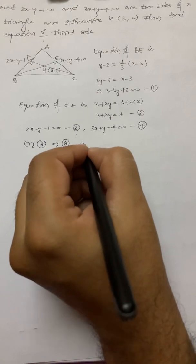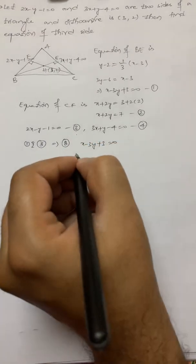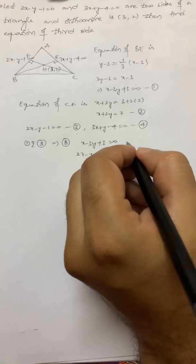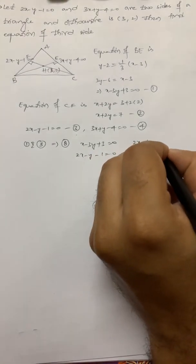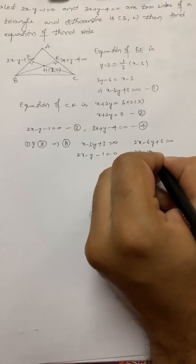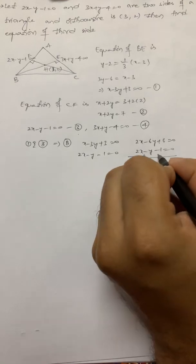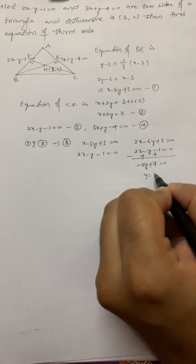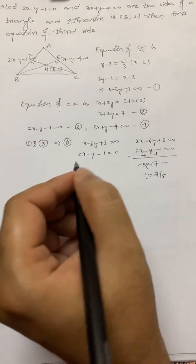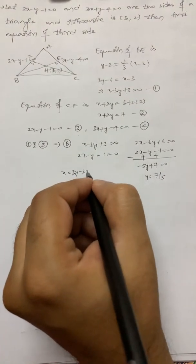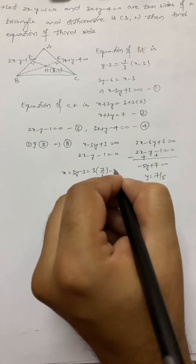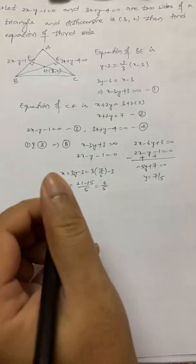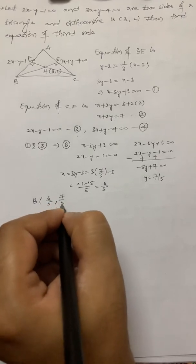So vertex B can be found by solving x minus 3y plus 3 equal to 0 and 2x minus y minus 1 equal to 0. Multiply the first equation by 2: 2x minus 6y plus 6 equal to 0, and subtract 2x minus y minus 1 equal to 0. This gives minus 5y plus 7 equal to 0, so y equals 7 by 5. Substituting back, x equals 3 times 7/5 minus 3 equals 21 minus 15 over 5 equals 6 by 5. So B is (6/5, 7/5).